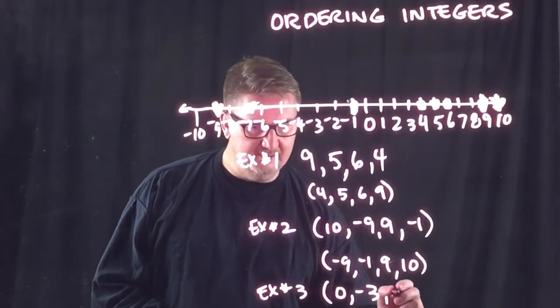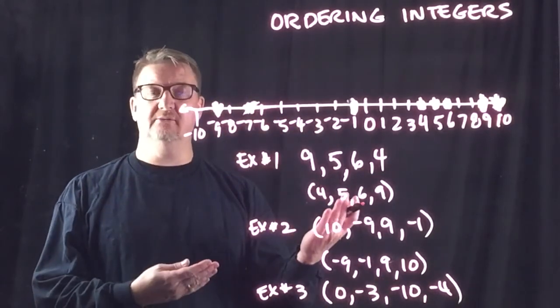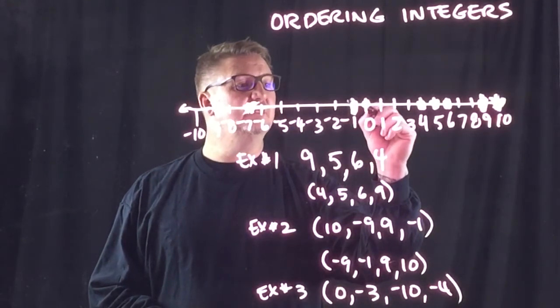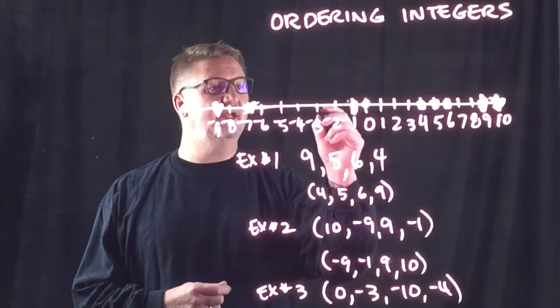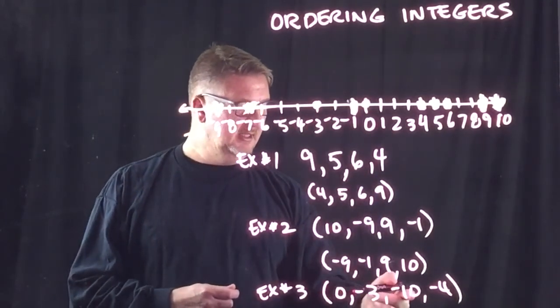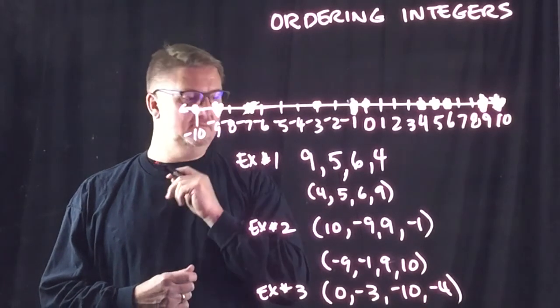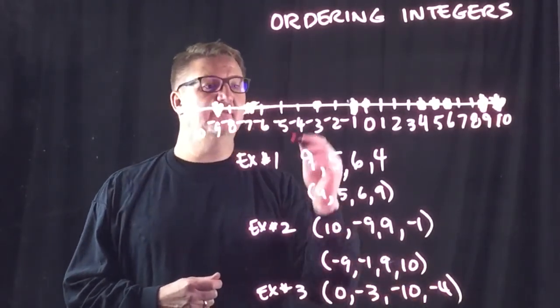So, first thing, we graph them. There's 0 right there. Next, we have negative 3. Next, we have negative 10. Negative 10 is right there. And then I have negative 4.